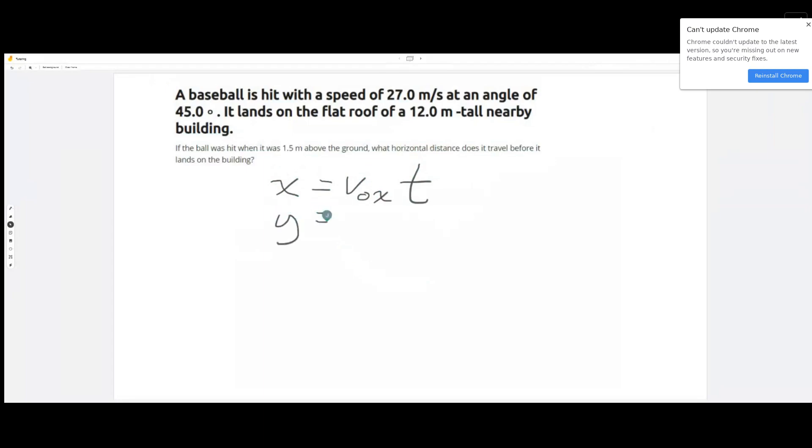The y position of the projectile is going to be equivalent to the initial height plus the initial y component of the velocity times time minus one-half gravity time squared. So we're going to start by plugging in the values that we have.